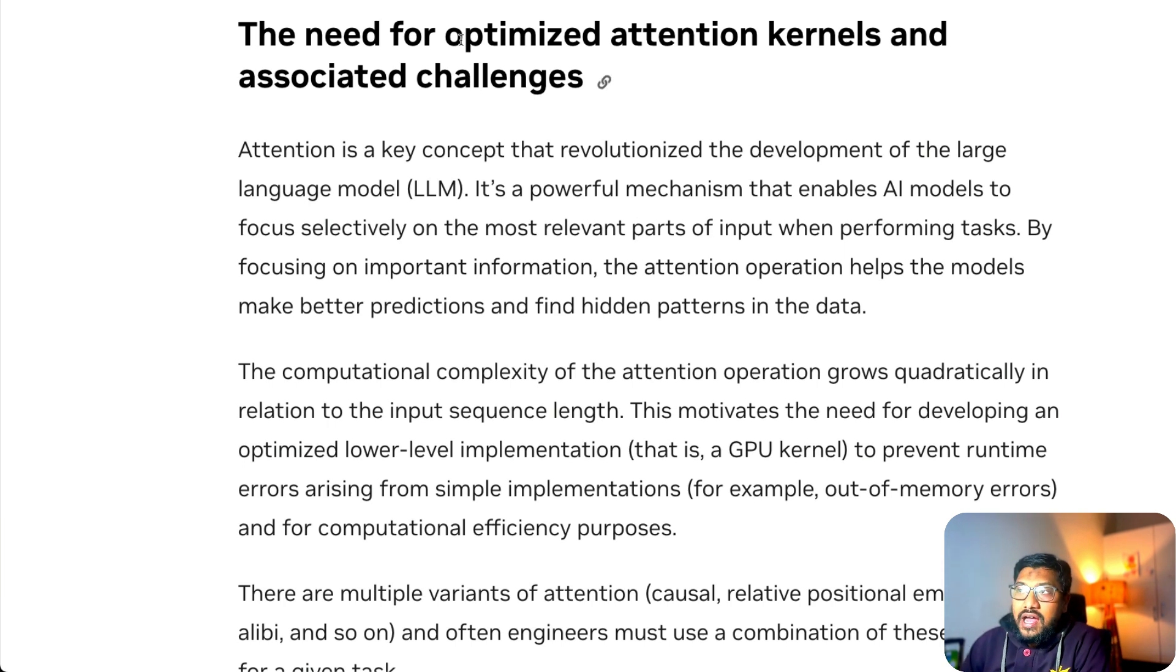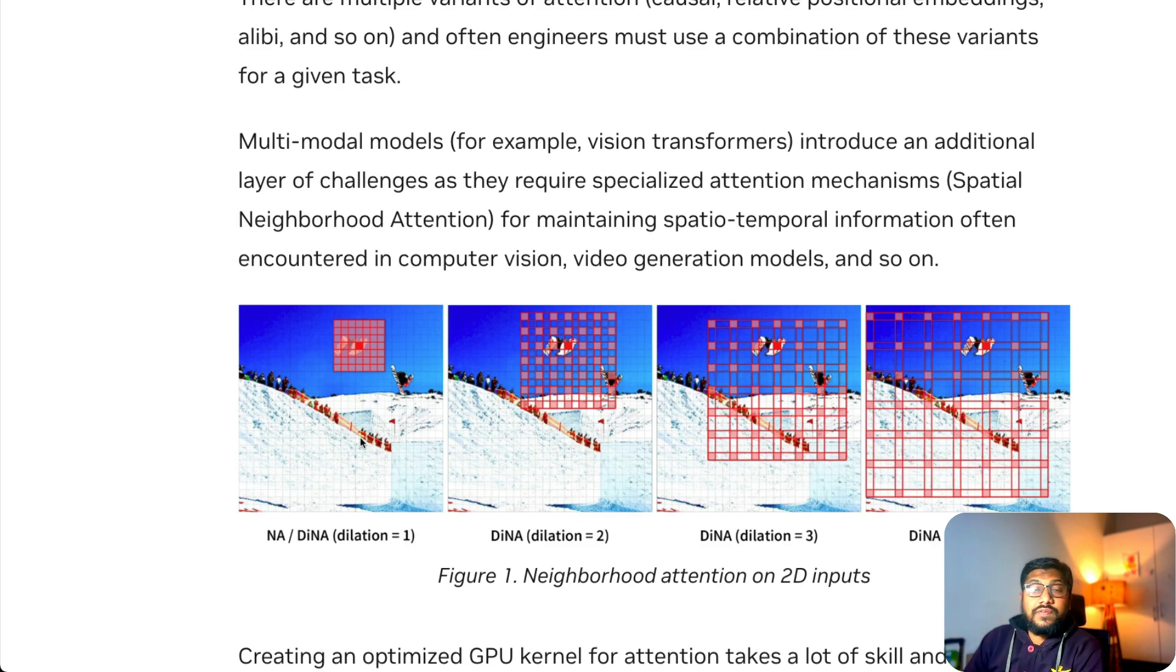Before we see the actual workflow, let us understand what is the task at hand. The task is to create optimized attention kernels. Attention is a key concept in transformers. One thing that you want to do here is to create a lower level implementation, an optimized lower level implementation, which is exactly what they call a GPU kernel, to prevent any runtime errors arising from simple implementations like out-of-memory errors. Basically, what you want to create is a program that interacts with the low-level components of a computer, in this case a graphical processing unit, that has to be computationally effective and also without any error.